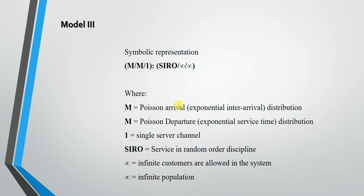Model 3 has the symbolic representation M/M/1:SIRO/∞/∞. The M/M/1 meaning is the same — Poisson arrivals and exponential service distribution with a single server channel. SIRO means Service In Random Order, so customers are taken for service randomly. The two infinities represent infinite customers allowed and infinite population.